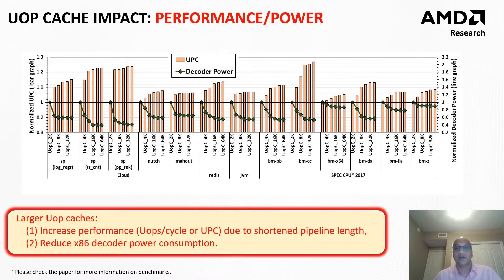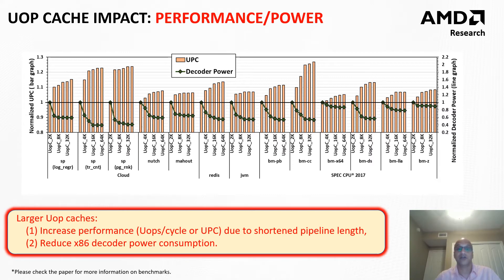Now, having looked at the brief introduction of the modern x86 processor front-end and the prediction window, let's take a look at how the micro-op cache plays a significant role in terms of increasing front-end efficiency. This figure shows the improvement in performance and reduction in decoder power as we increase the micro-op cache size. As you can see, as the micro-op cache size increases, more micro-ops can be fetched from the micro-op cache, increasing the UOP cache fetch ratio, allowing more micro-ops to bypass the decoder and hence increasing the UOP dispatch bandwidth, thereby increasing performance. Since more micro-ops fetched from the micro-op cache can also bypass the decoder, the decoder power is also significantly reduced. More results on UOP cache dispatch bandwidth, branch prediction latency, and UOP cache hit ratio are present in the paper.